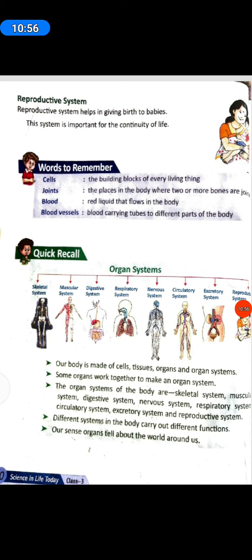Words to Remember. Cells: the building blocks of every living thing. Joints: the places in the body where two or more bones are joined. Blood: the red liquid that flows in the body. Blood vessels: blood-carrying tubes to different parts of the body.